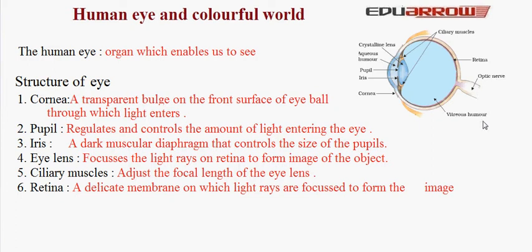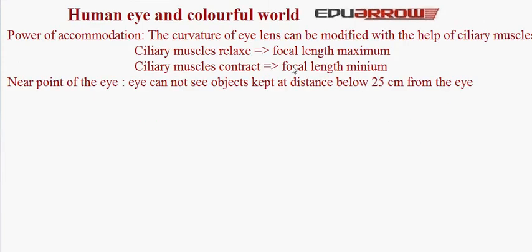Let us now study what is meant by power of accommodation. The eye lens is made up of fibrous jelly-like material. The curvature of the eye lens can be modified with the help of ciliary muscles. When ciliary muscles relax, the focal length of the eye lens is maximum and we can see distant objects clearly. When ciliary muscles contract, the focal length is minimum and we can see near objects clearly. But there is a limit of accommodation — beyond a certain limit, our eye lens cannot change its focal length.